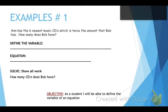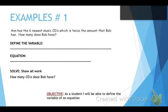Example number one. This is what you're going to experience on your I-step. Define the variable, write the equation, and solve it showing all your work — so really three things we need to do. The problem says: Ann has the six newest music CDs, which is twice the amount that Bob has. How many does Bob have?